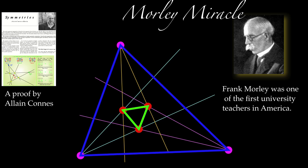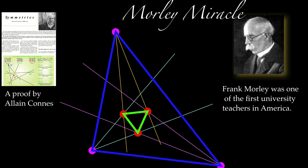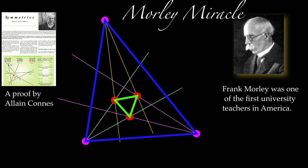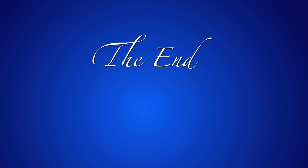And this is the Morley miracle. Trisect each angle of a triangle. We get the intersection points, which are located on an equilateral triangle. This is the end.